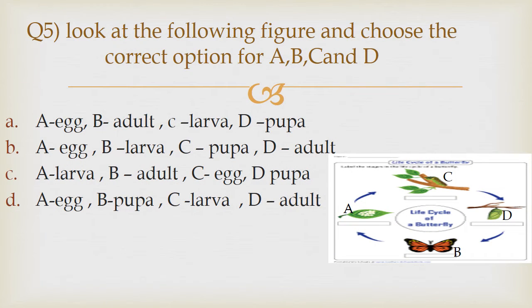Question number 5. Look at the following figure and choose the correct option for A, B, C and D. Option A: A — Egg, B — Adult, C — Larva, D — Pupa. Option B: A — Egg, B — Larva, C — Pupa, D — Adult.